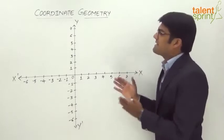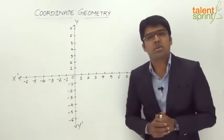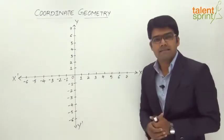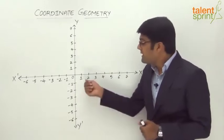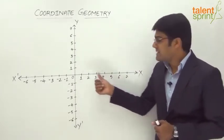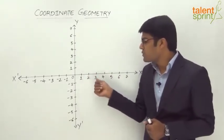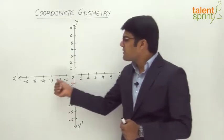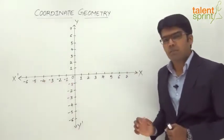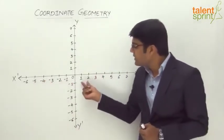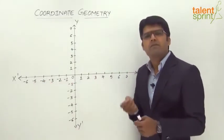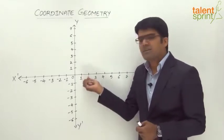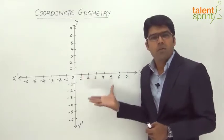On both the perpendicular axes, we have indicated only the integral values — that is, +1, +2, +3 and so on, and -1, -2, -3 and so on. But in between 1 and 2 we again have infinite values which can be further denoted if required.